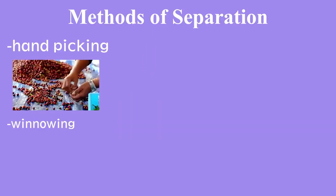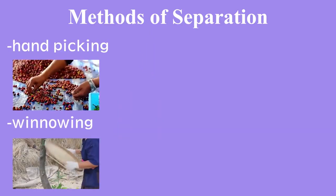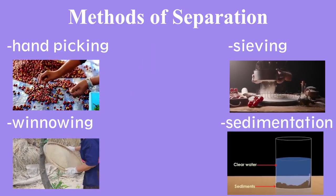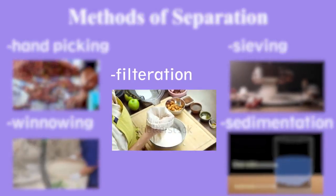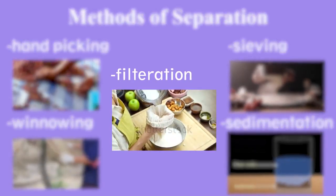We learned that each and every substance, when mixed with each other, we need to separate them for different purposes and we use different processes to separate different kinds of material from their mixture. Some of these methods are handpicking, winnowing, sieving, sedimentation, decantation and filtration — these are some methods by which we can separate the substances from their mixture.